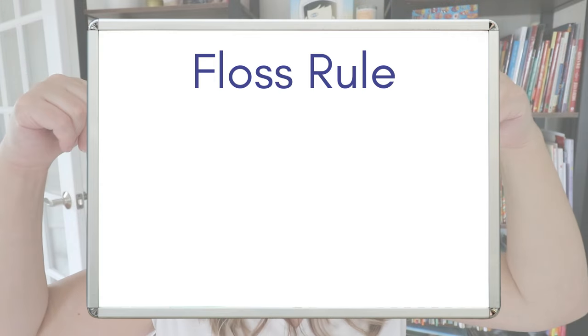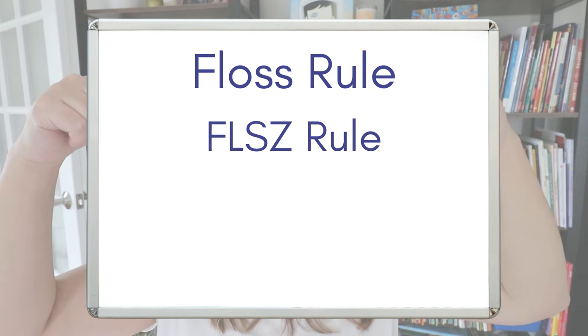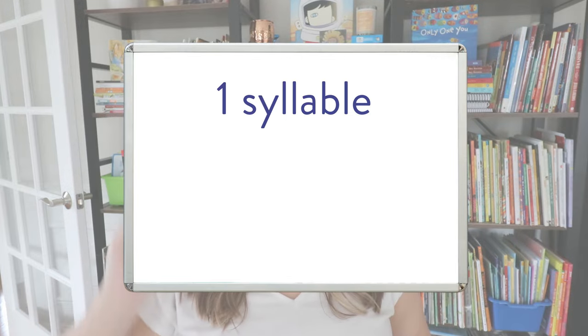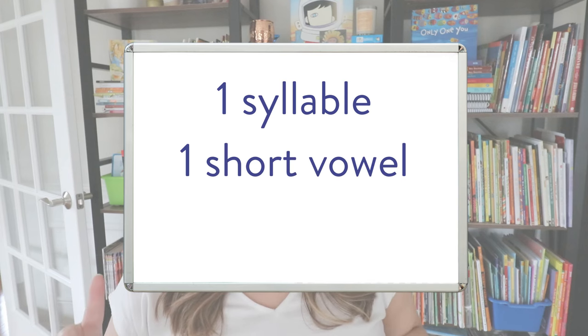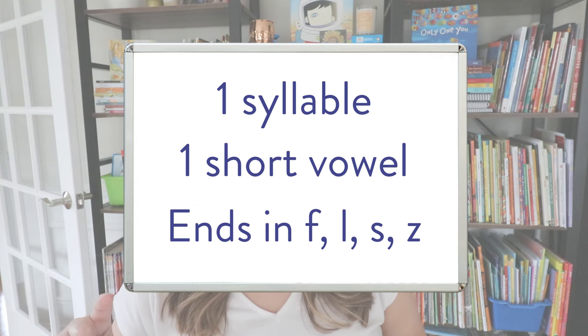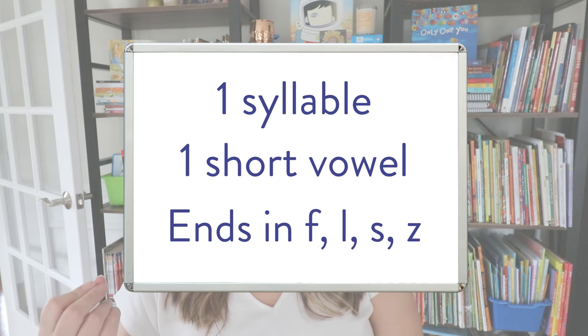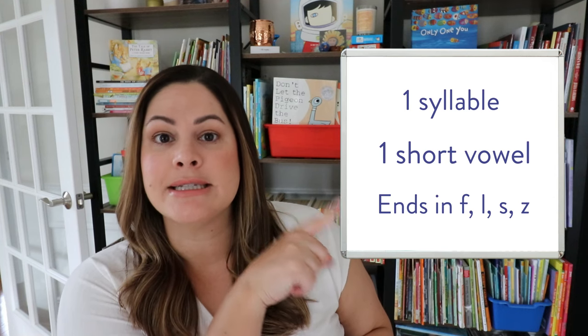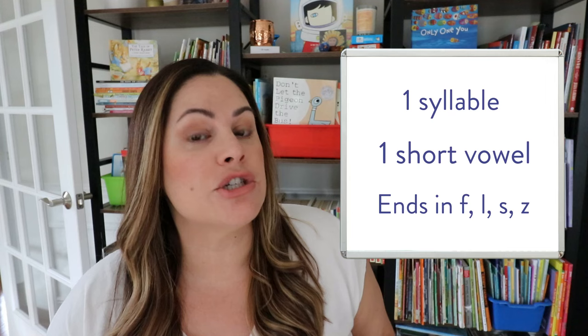We've seen it called the floss rule, and it's also been called Sammy Loves Friendly Zebras, as well as Sammy Loves Fried Zebras, which I believe is from Fundations. It's also known as a 1-1-1 rule, which means one syllable, one short vowel, and ends in one of the following consonant sounds: F, L, S, or Z — hence the name floss. If a word has all of those, the last letter of that word is going to be doubled.